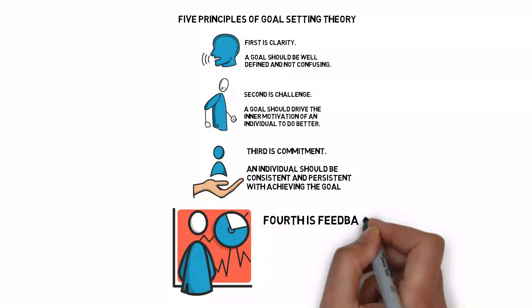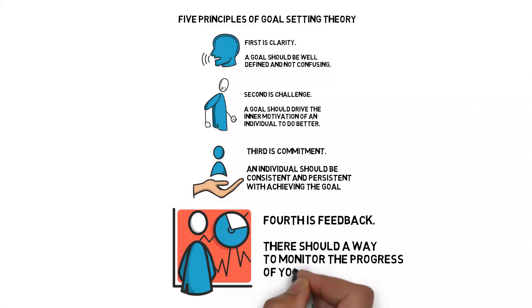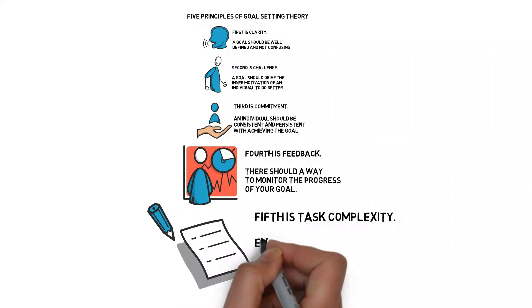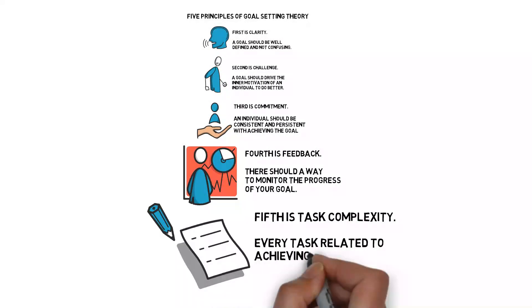Fourth is feedback. There should be a way to monitor the progress of your goal. And fifth is task complexity. Every task related to achieving a goal should be manageable.